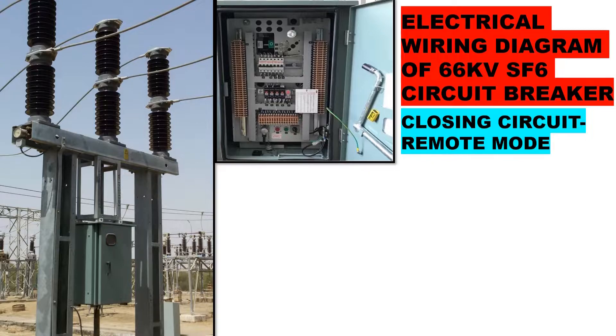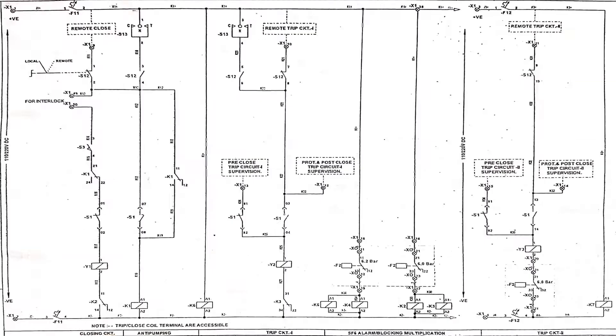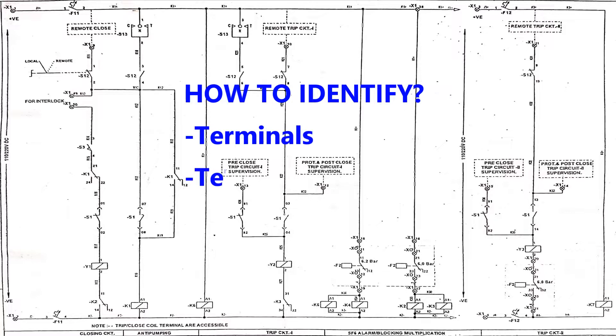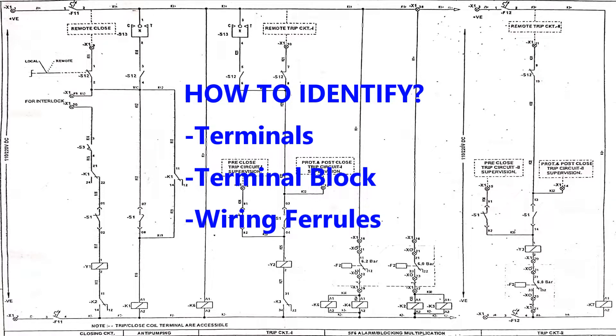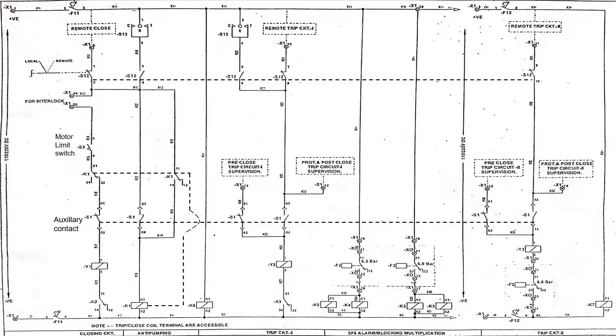Today we will see the closing circuit in remote mode of a 66kV SF6 circuit breaker wiring diagram. In this given network diagram, we will learn how to read and identify its terminal block and wiring ferrules. Here we will only see the closing network path in this video, and the remaining part will be covered in the upcoming next videos.